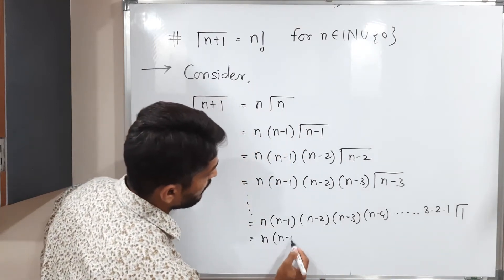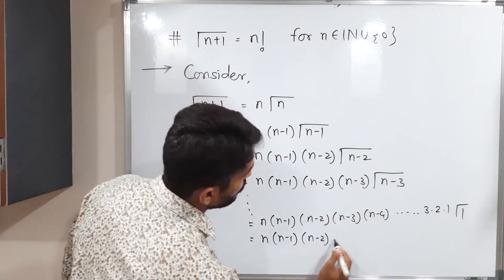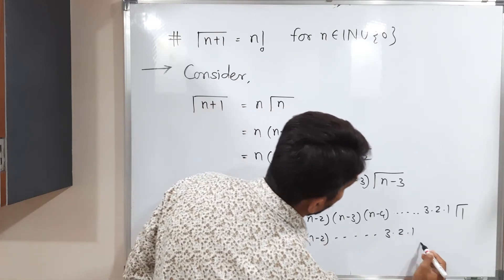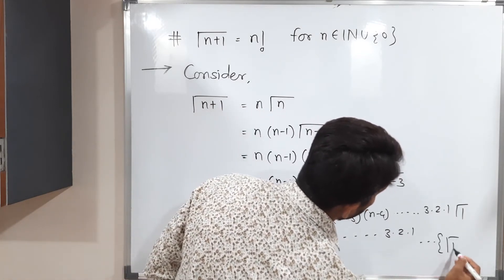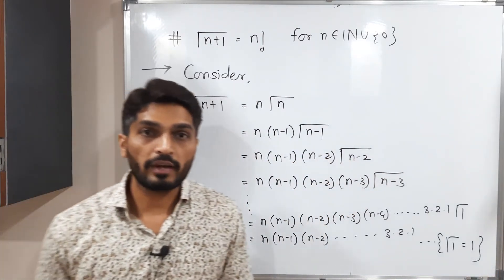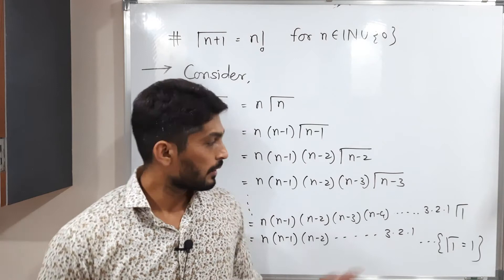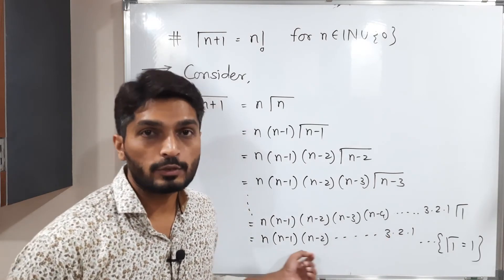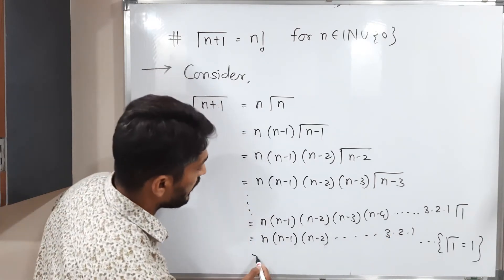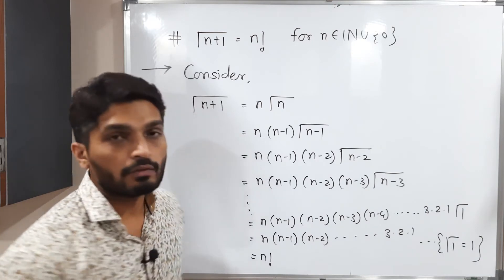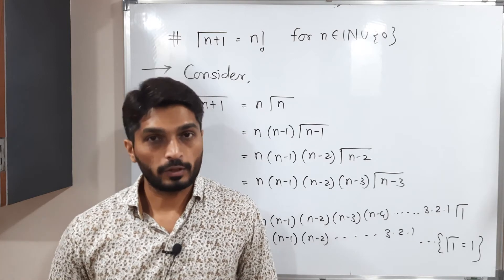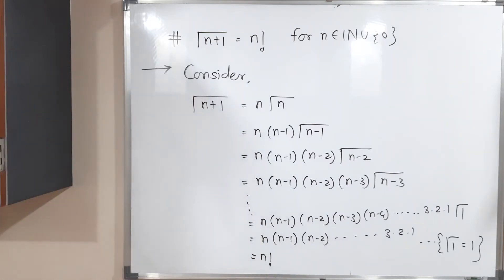Since γ(1) = 1, we are left with n·(n−1)·(n−2)·…·3·2·1, which is nothing but n!. In this way we have proved that γ(n+1) = n!. Make a screenshot of this result.